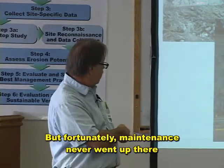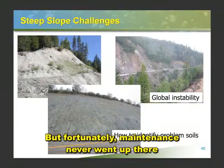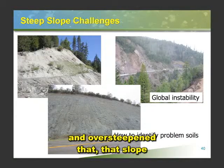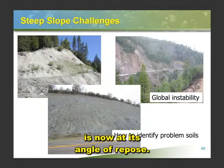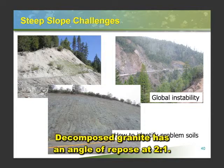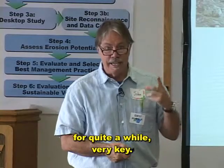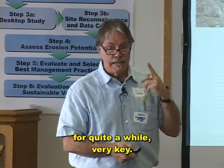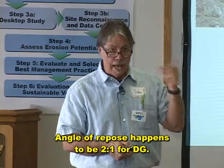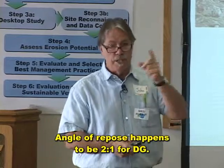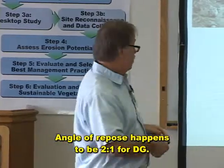Fortunately, maintenance never went up there and oversteepened that. That slope is now at its angle of repose. Decomposed granite has an angle of repose at 2-to-1. Given no inputs of excess water, it'll stand there for quite a while. Very key — angle of repose happens to be 2-to-1 for DG.